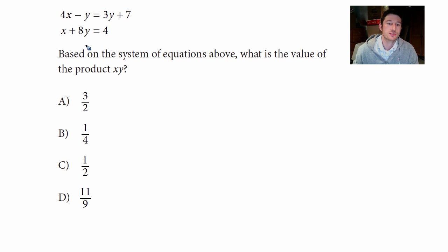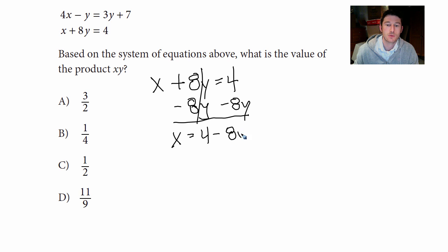The first thing we're going to do is take a look at this easier equation, the bottom one, and I'm going to rewrite it because I want to get one of the variables by itself. That's the goal. So I'm going to minus 8Y from both sides. We'll start off there.